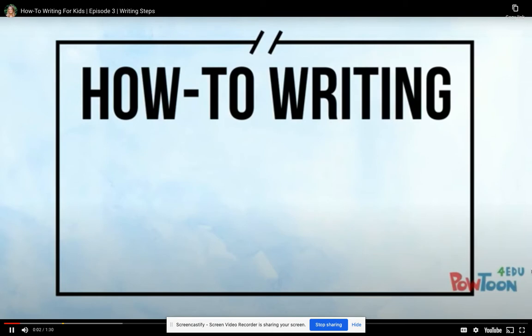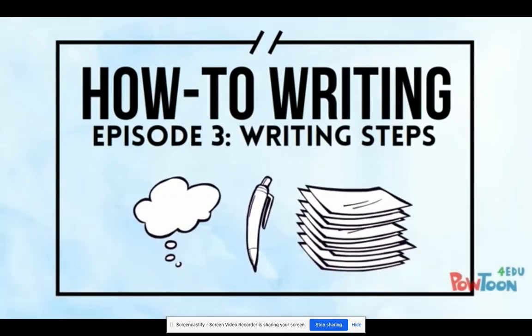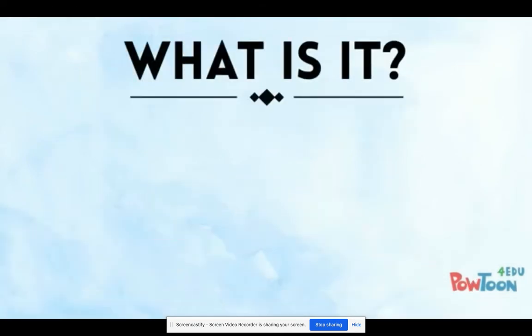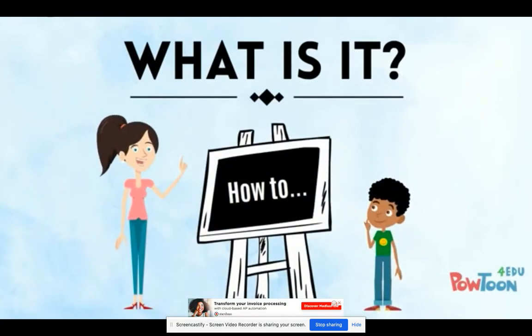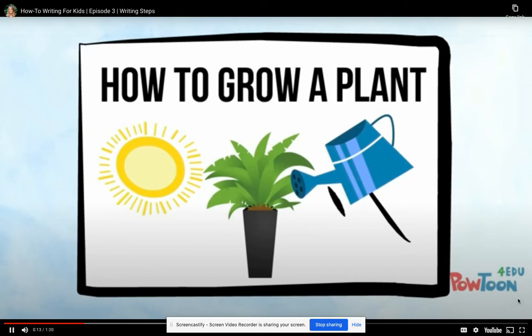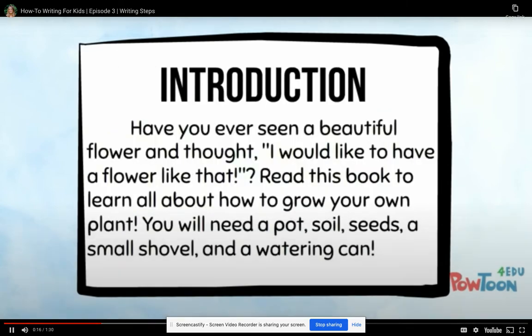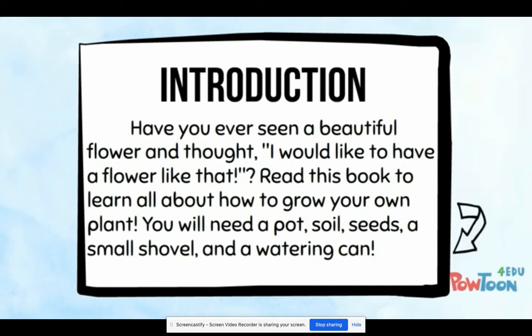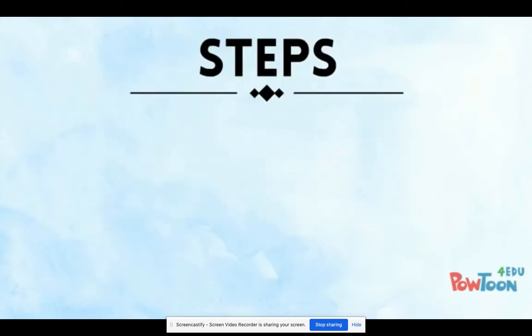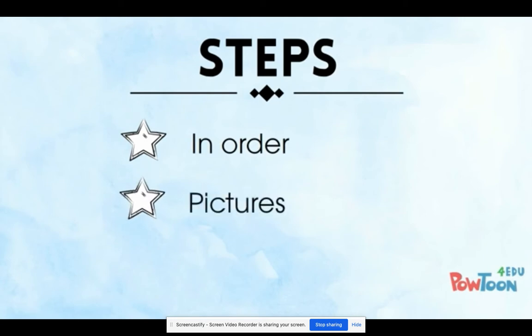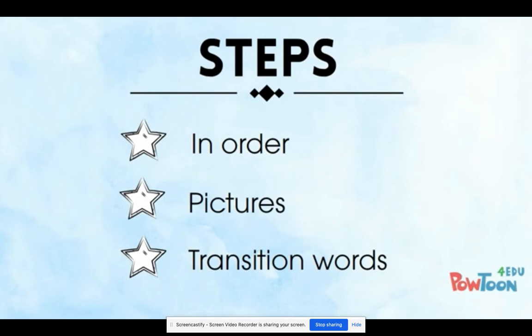How-to writing, episode three: writing steps. We write how-to writing to teach others. I am writing how to grow a plant. I've already written an introduction where I hooked the reader, introduced the topic, and listed the materials needed. Now I'm ready to write the steps. My steps should tell the reader what to do in order. It should also include pictures that help teach the reader. And there should be transition words like first, next, then, and last.